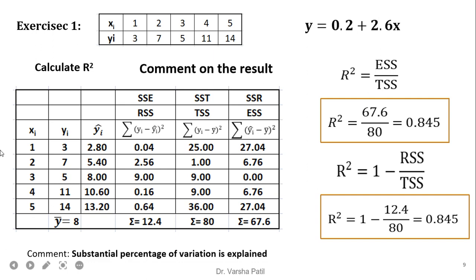Now we will see some exercises. This example is given in which X is the independent variable and Y is the dependent variable. Here, Y-dash can be easily calculated and Y-dash is nothing but 8. We are applying simple linear regression, and after applying simple linear regression, we get the answer Y-cap equals 0.2 plus 2.6X. This is the intercept and slope term.